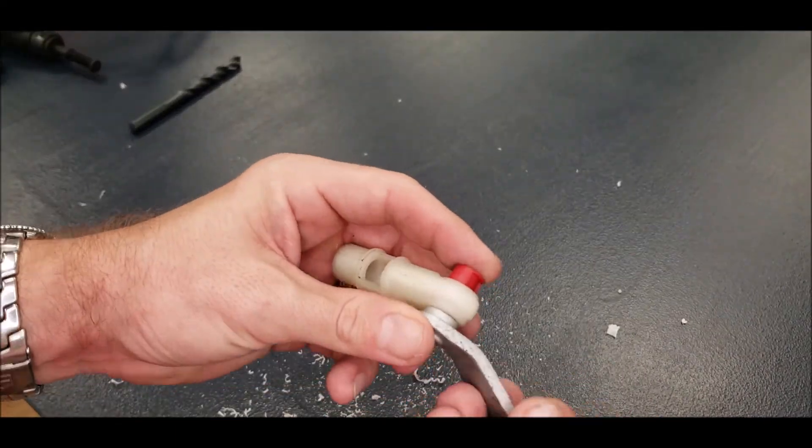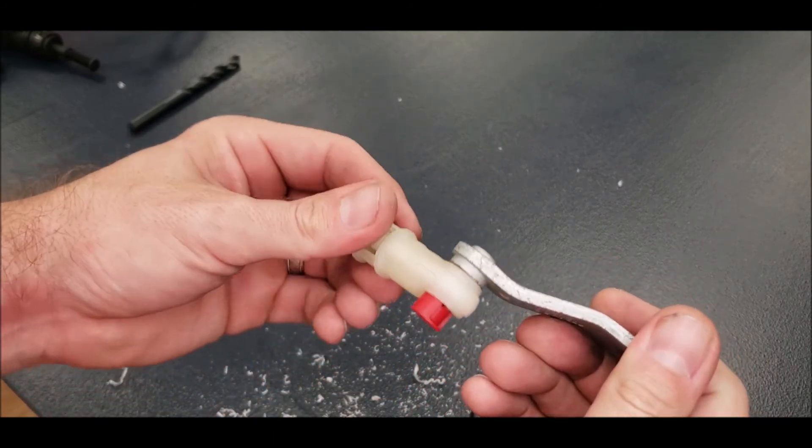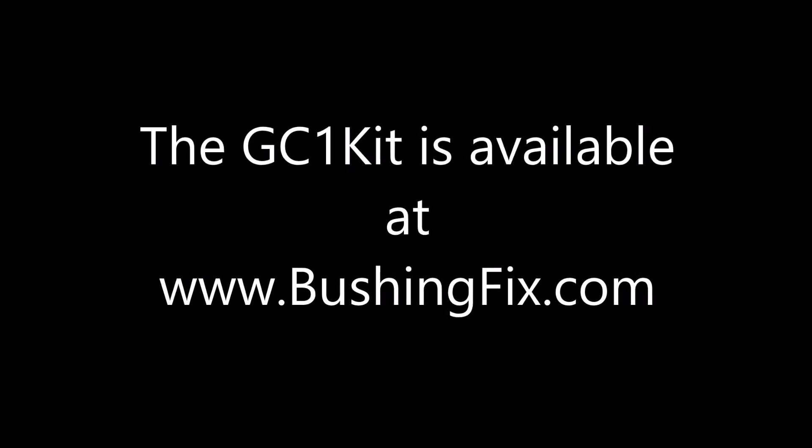Once you've got the bushing in place, you can put everything onto the shift lever, and when it snaps into place, that will hold everything together. Adjust the shift lever according to the service manual, and that's it, you're done.